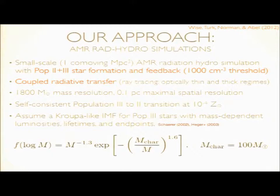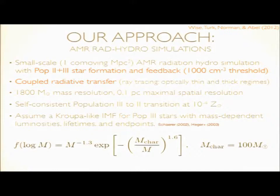Some details about the simulation I'll be showing today: it's one comoving megaparsec across, and we have both population 2 and population 3 stellar feedback and formation. We set this density threshold to form stars at a thousand cubic particles per cc. It has radiation transfer; its mass resolution is just below 2,000 solar masses, and its maximal spatial resolution is a tenth of a parsec. We transitioned from Pop3 stars to Pop2 star formation because they have different models and different stellar characteristics at around 10^-4 solar metallicity. We've done parameter studies and our results aren't that sensitive to this choice.